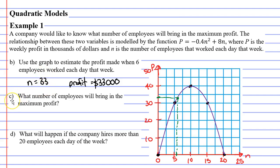Now moving on to question C. It says, what number of employees will bring in the maximum profit? And this is where your maximums and minimums come in really handy. We can see that our maximum is here. And if you look down below it, that's when we hired 10 employees. So 10 employees is the optimal amount of employees to hire.